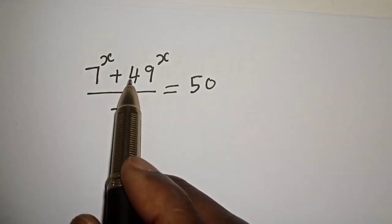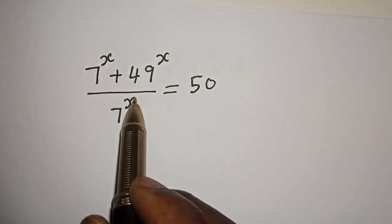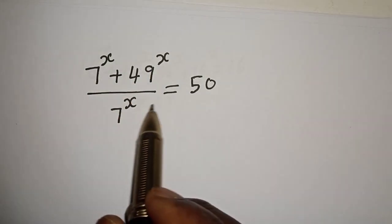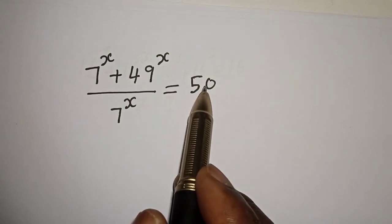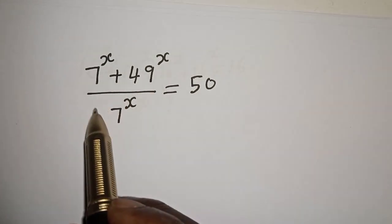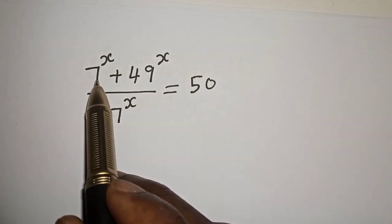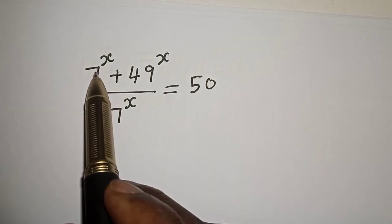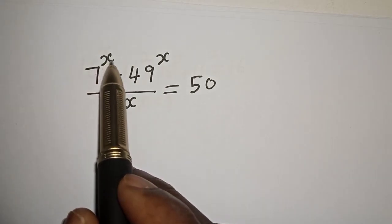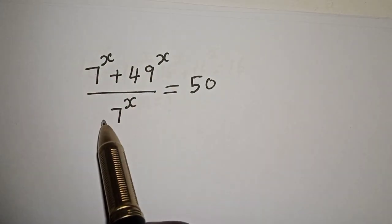7 raised to power s plus 49 raised to power s, divided by 7 raised to power s, is equal to 50. What is the value of s? Hi everyone, welcome to my class. In this class, we want to find the value of s from this beautiful equation.